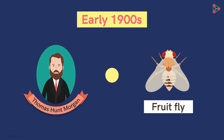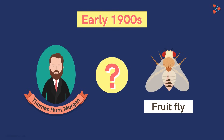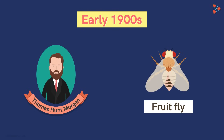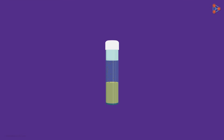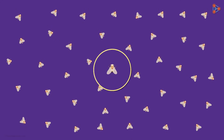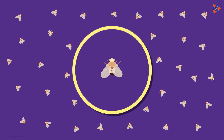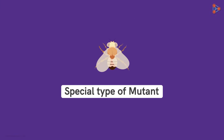Did he really find something interesting? Yes, he did. One fine day, in a vial containing red-eyed flies, Morgan found something strange. He could spot a male fly with white-coloured eyes. Morgan knew that this is a special type of mutant and the experiments with this would lead to a new path in genetics.